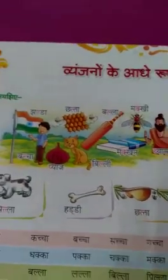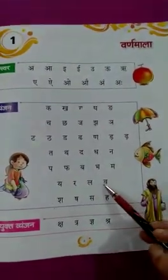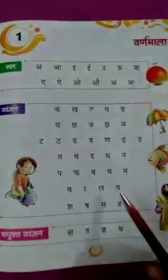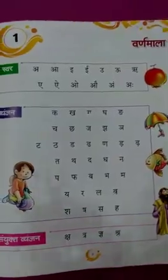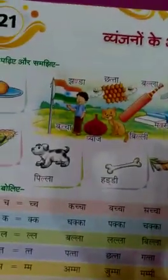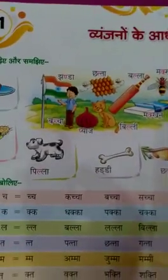Students, first of all, in our previous UKG studies we have learned the Swar and Vyanjanu. Here is the Varnmala of Shabd. These are the Swar and these are the Vyanjans. Now in this chapter we learn the half Swar and Vyanjanu.